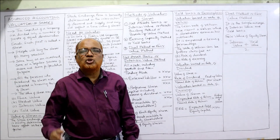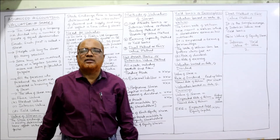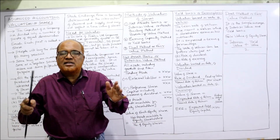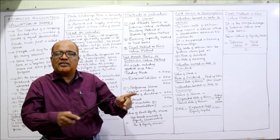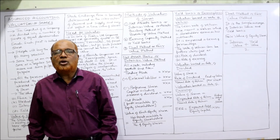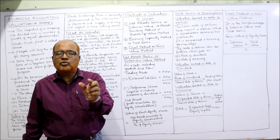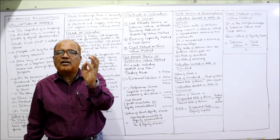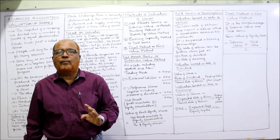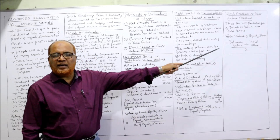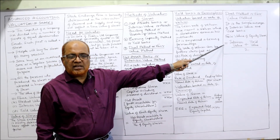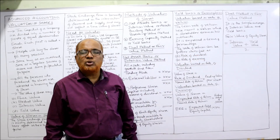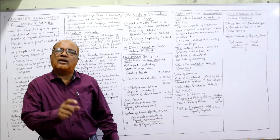The third and last method is the dual method or fair value method. It is not an independent method — it depends on the first two. The fair value is simply the average of intrinsic value and yield value: Fair value = (Intrinsic value + Yield value) ÷ 2.